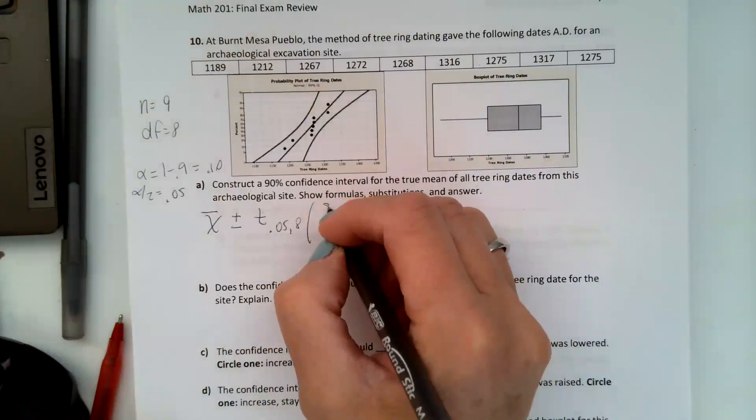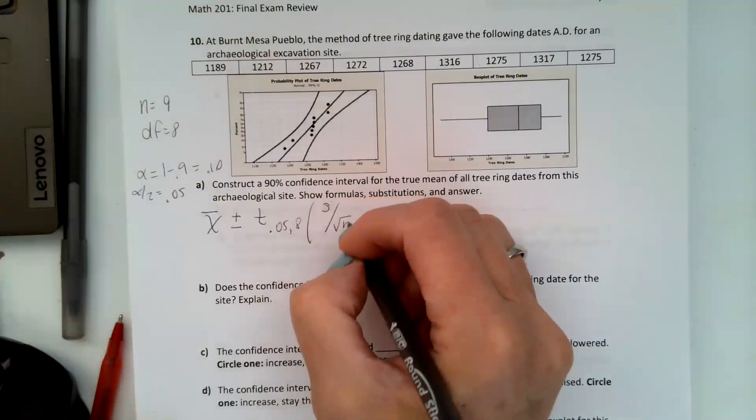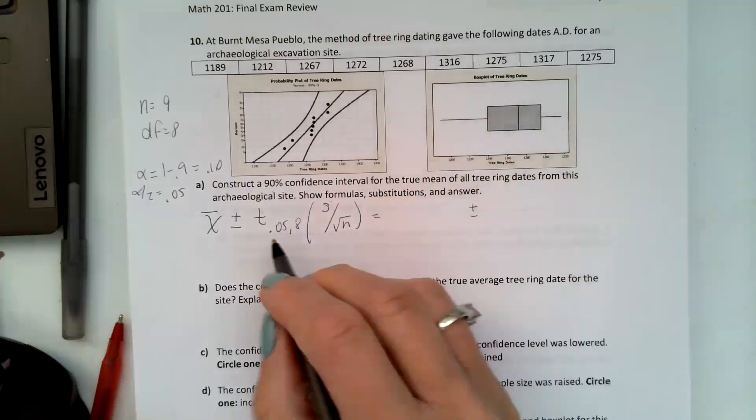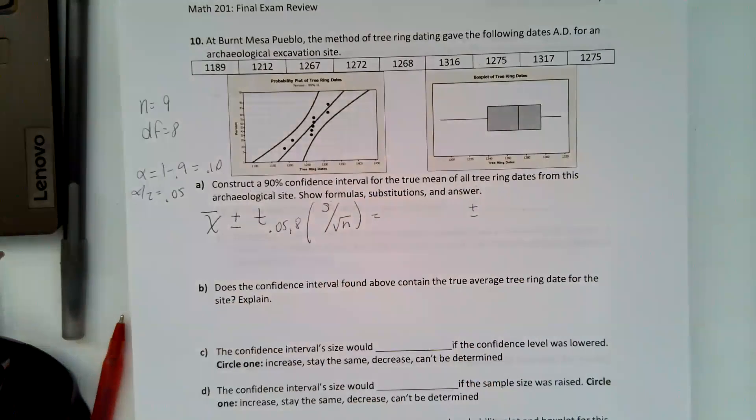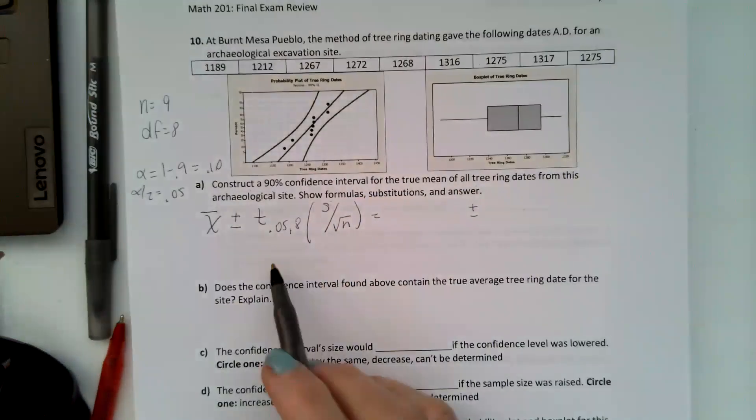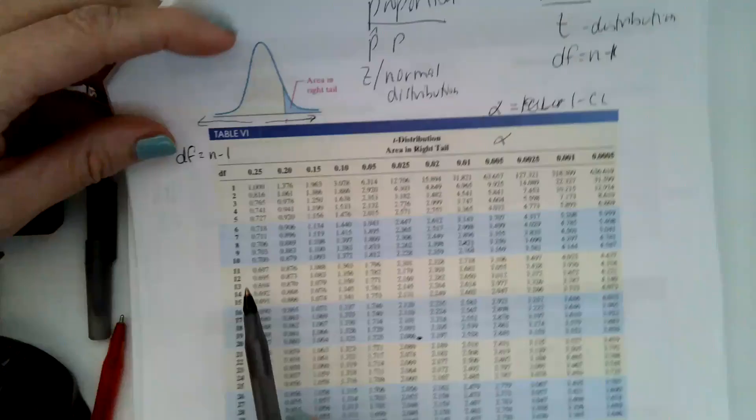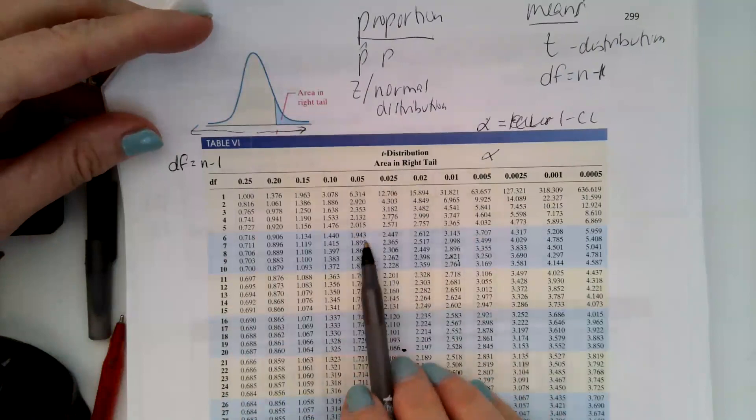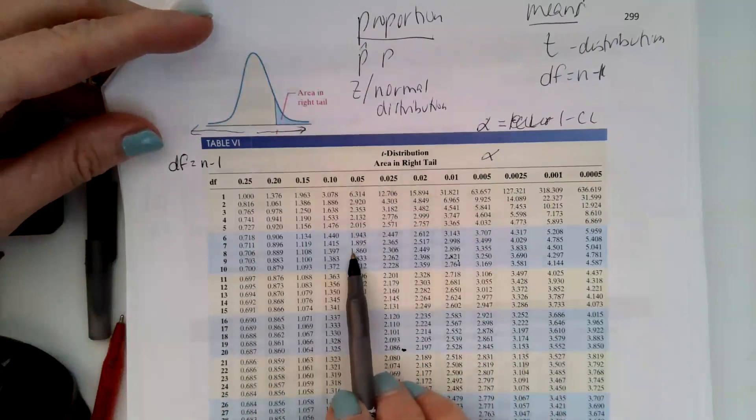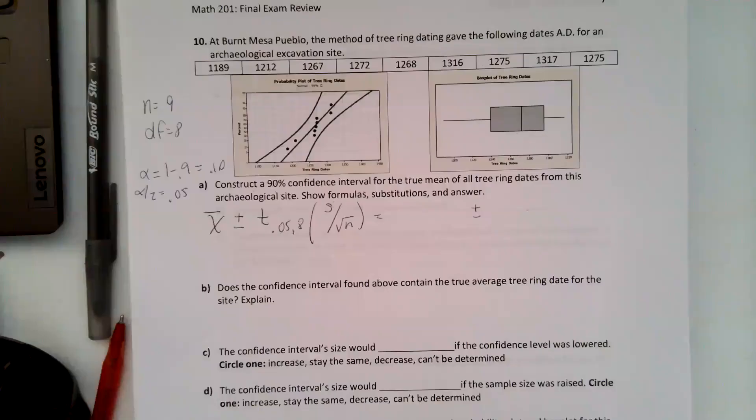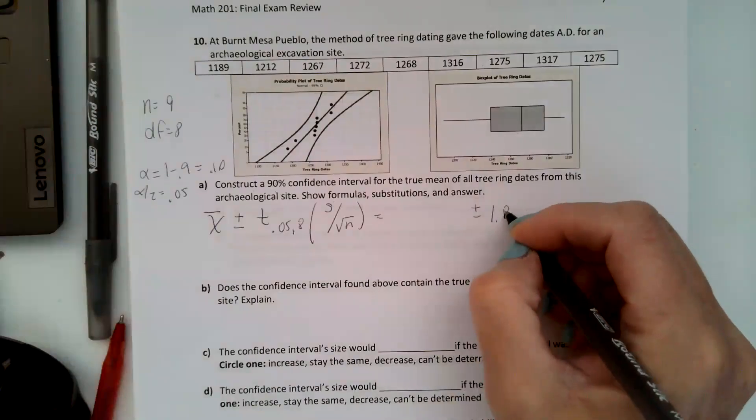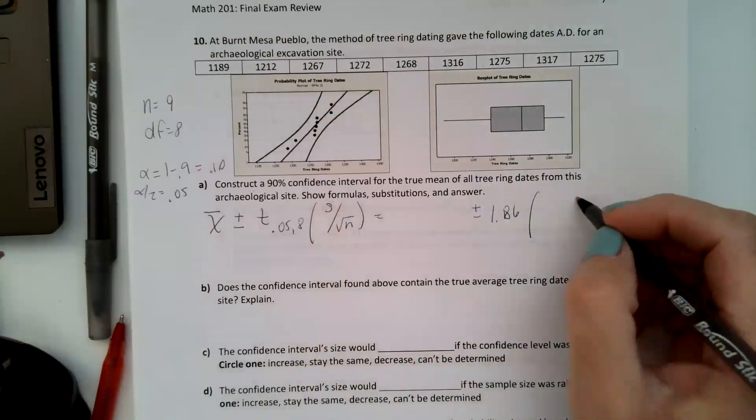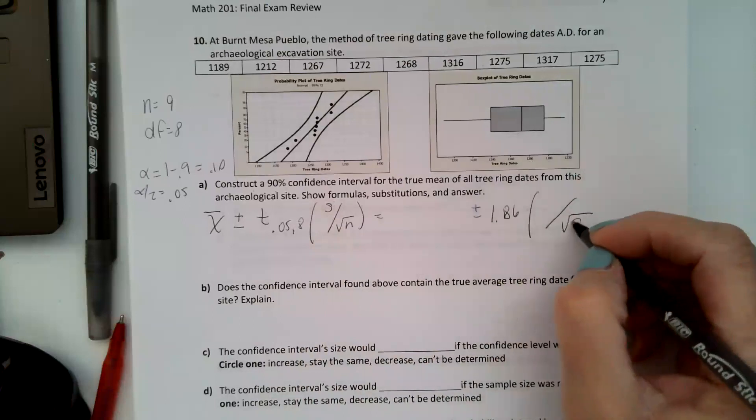And then we have multiplied by the sample standard deviation divided by the square root of n. So we have to find our sample mean in Desmos, our critical t value 0.05, and degrees of freedom. We're going to go over to 0.05 so that's going to be 1.86, and then we're going to get our sample standard deviation from Desmos and then it will be divided by the square root of n which is the square root of 9.